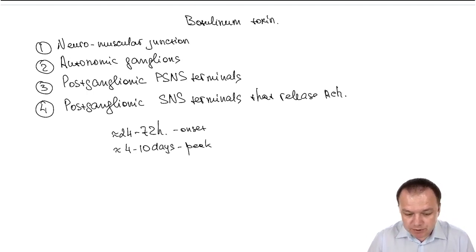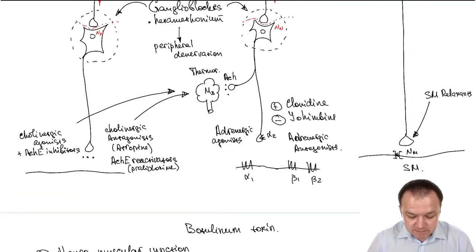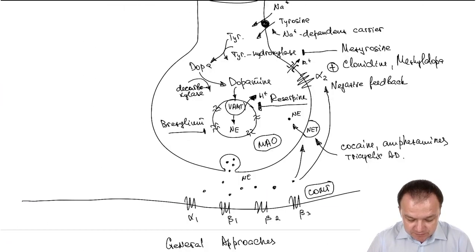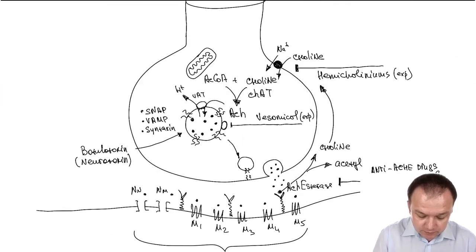Another question: why does botulinum toxin not affect adrenergic synapses and only affect cholinergic synapses? The answer is because cholinergic synapses have specific receptors for botulinum toxin.